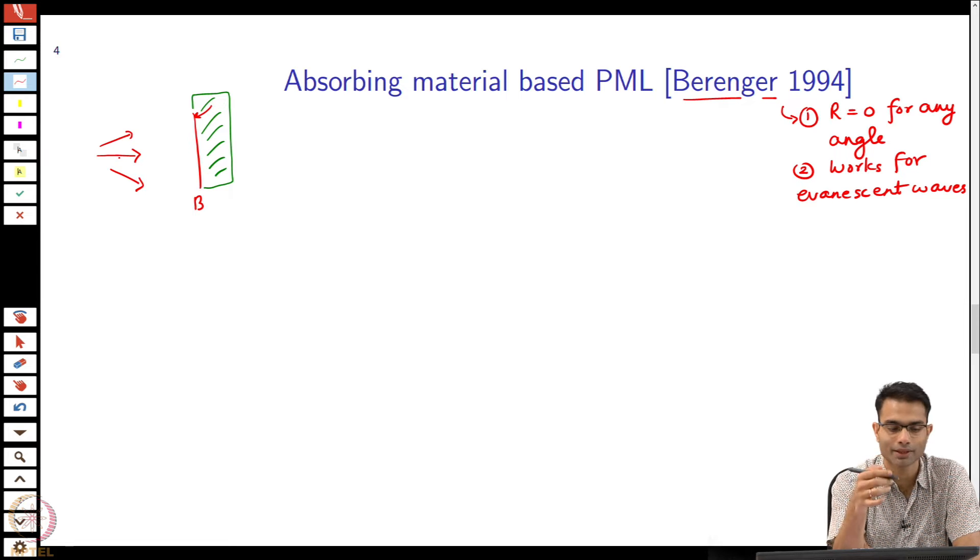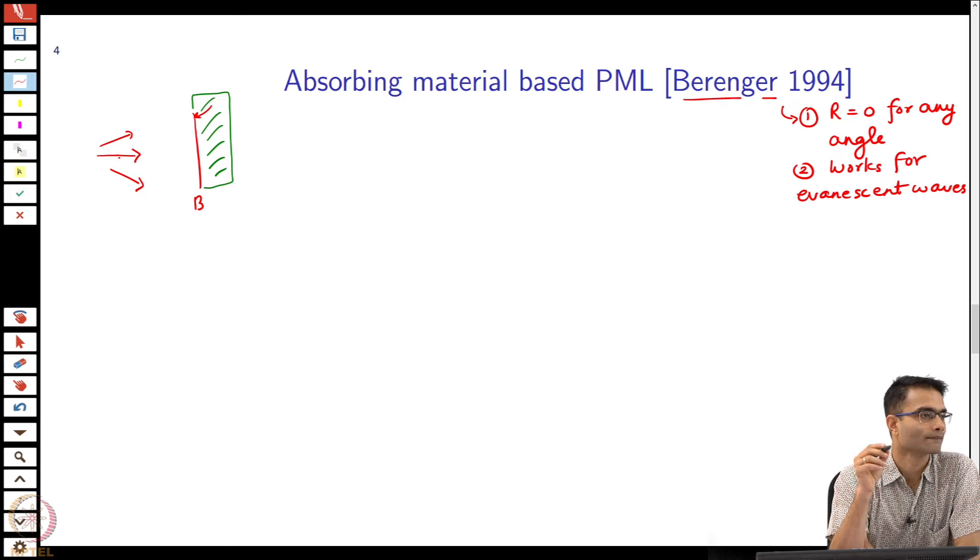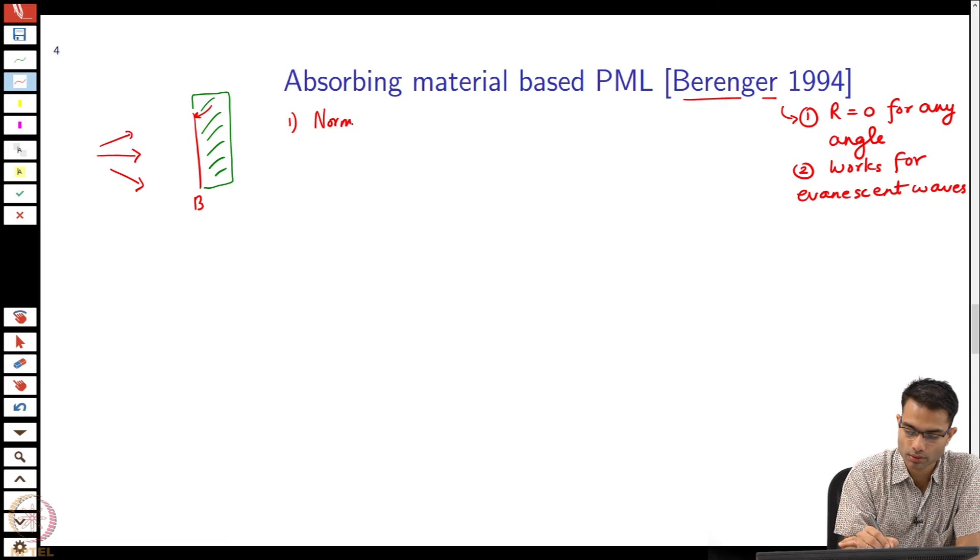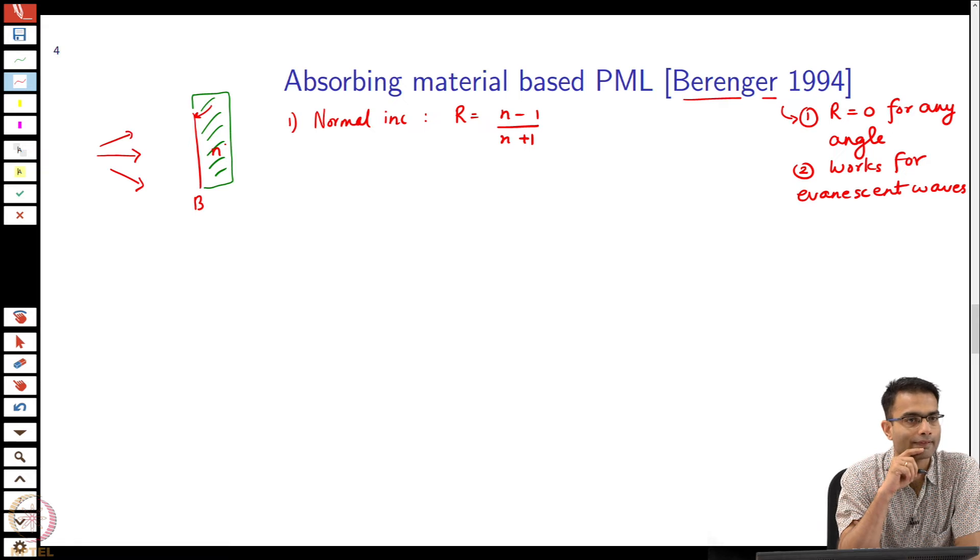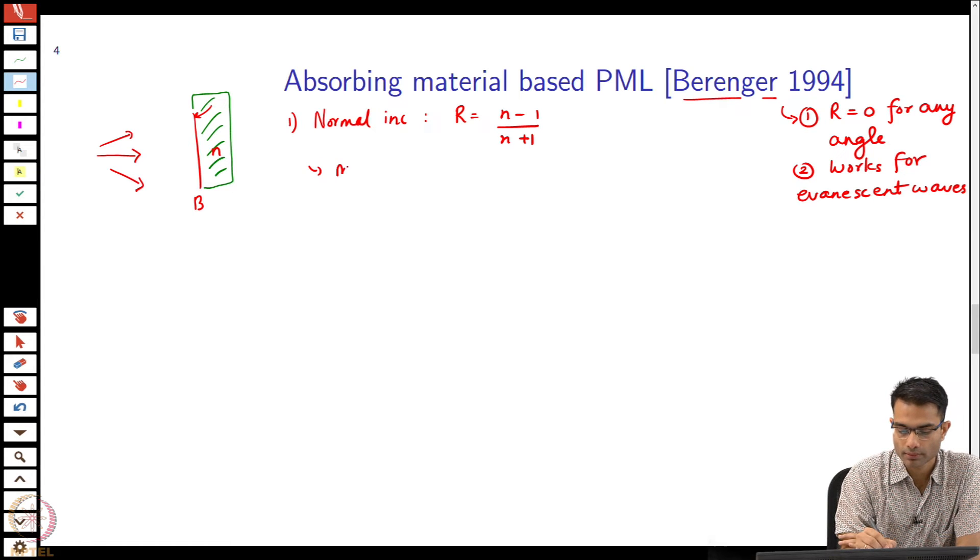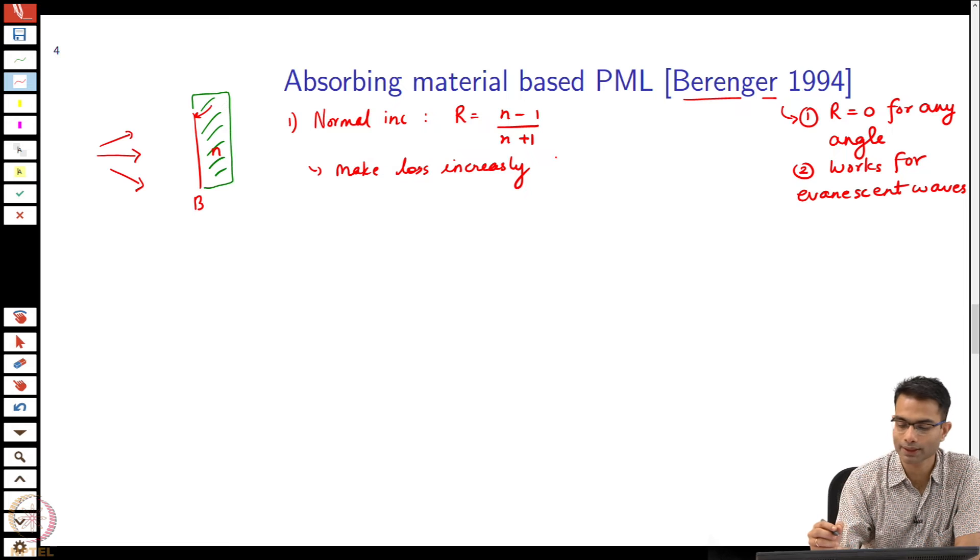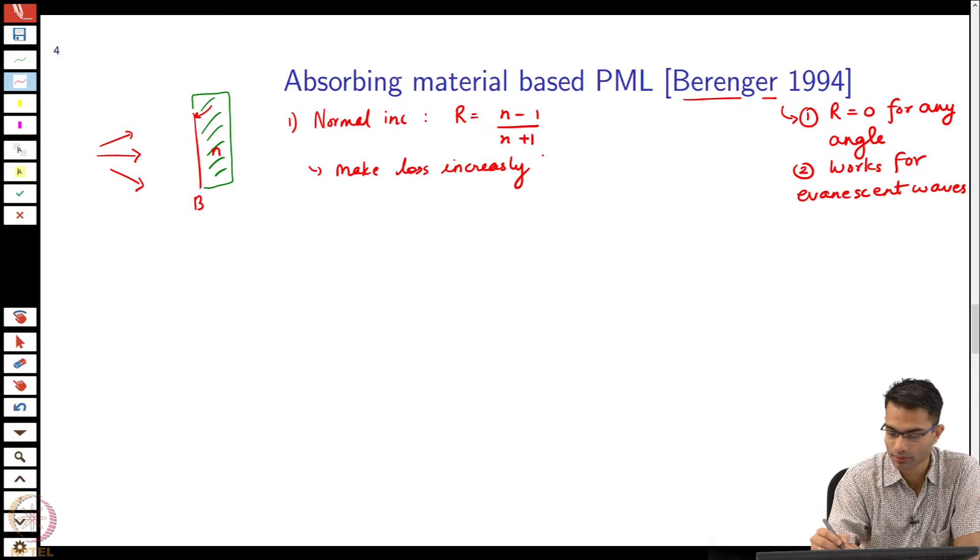Any other creative solutions from here? Very good. One is if the loss - so let us say normal incidence, simple case - reflection coefficient is n minus 1 by n plus 1, this is n. The suggestion is make n - I mean make the loss increase slowly. What is a more technical word for slowly? Adiabatic. You want a slow increase, so the correct word is adiabatic.